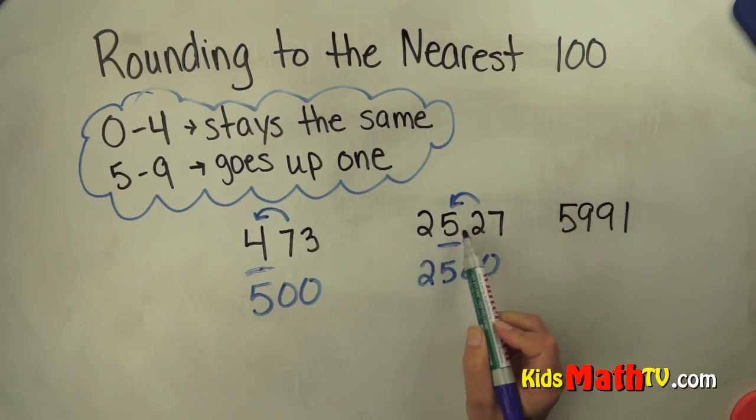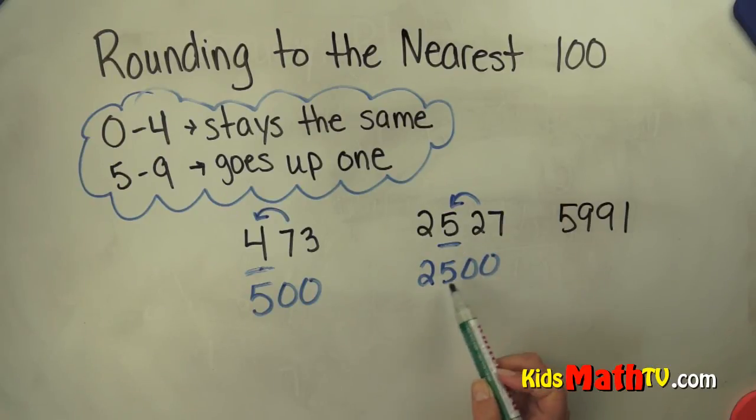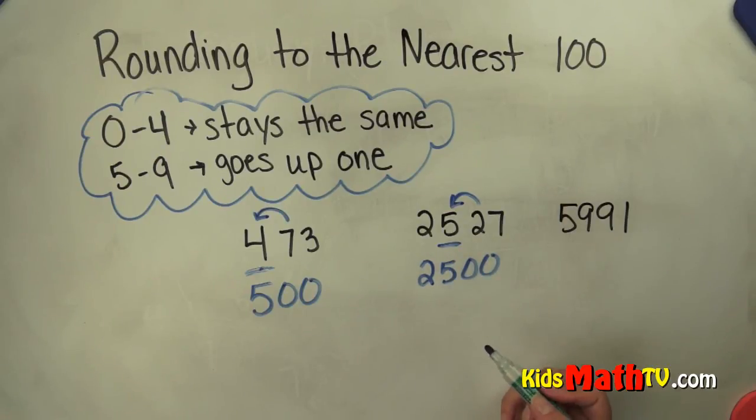Two thousand five hundred twenty-seven is closer to two thousand five hundred than it is to two thousand six hundred.